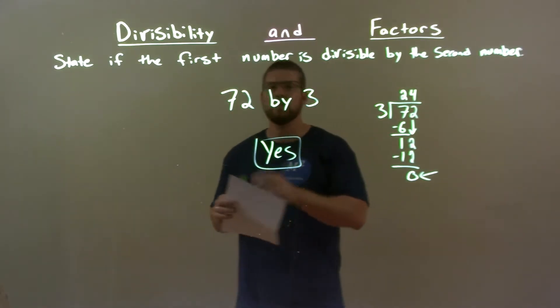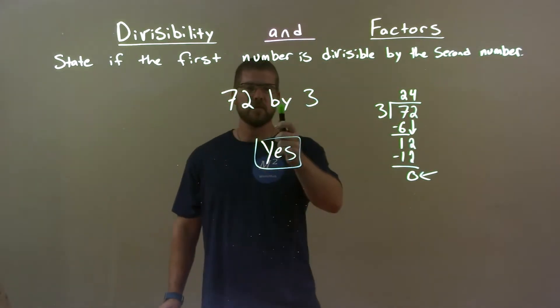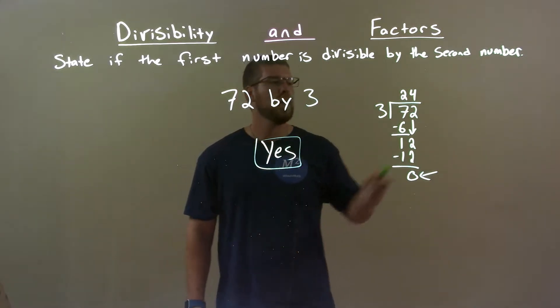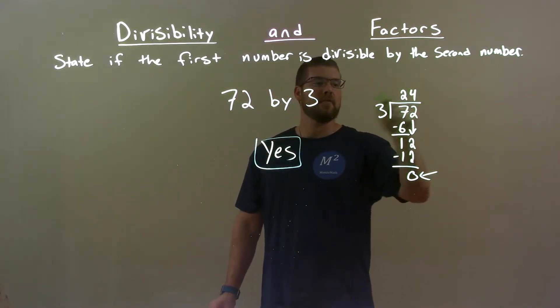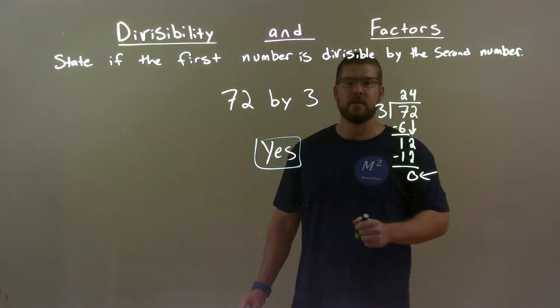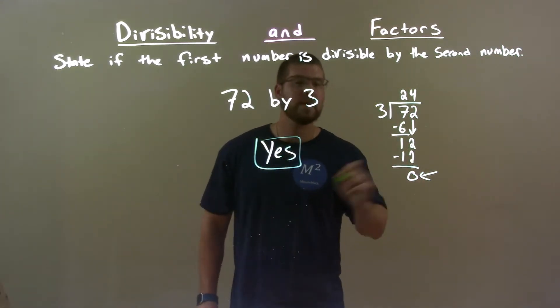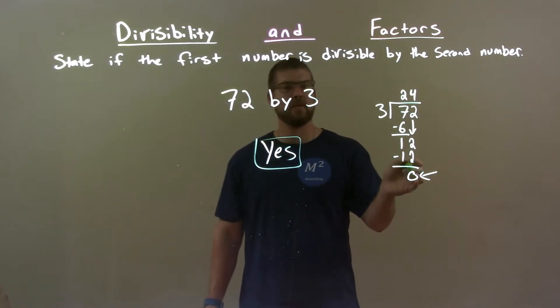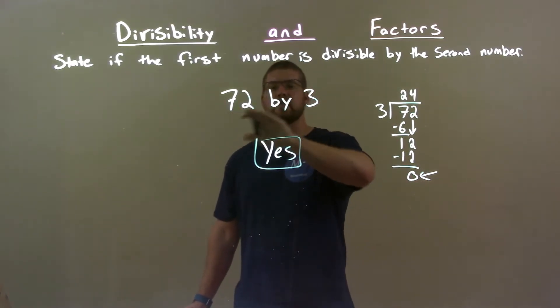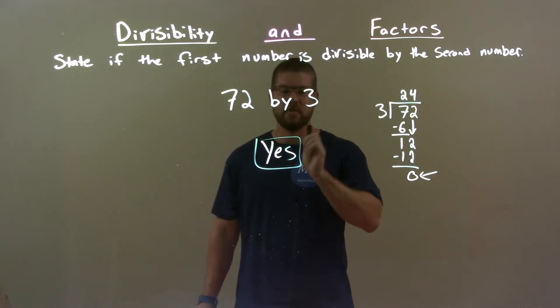Quick recap. We're given 72 by 3. Is 72 divisible by 3? We did long division to check and found a remainder of 0 and an answer of 24 when we divided 3 into 72. The remainder of 0 is the clue here, the kicker. Since we have a remainder of 0, we know 72 is divisible by 3. So yes.